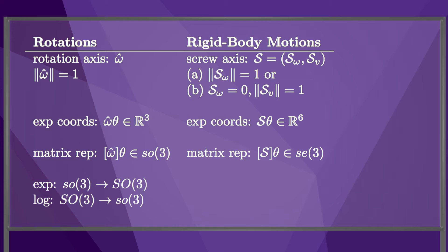For rotations, the exponential maps matrices in little so(3) to rotation matrices, and the log maps rotation matrices to little so(3). For rigid body motions, the exponential maps matrices in little se(3) to transformation matrices, and the log maps transformation matrices to little se(3).